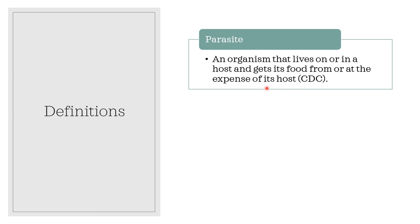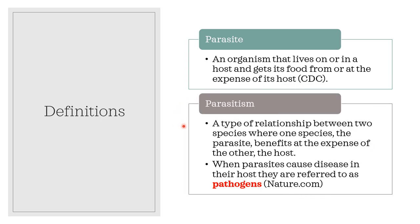A parasite is a type of relationship between two species where one species, the parasite, benefits at the expense of the other, which is the host. When parasites cause disease in their host, they are referred to as pathogens, according to nature.com.